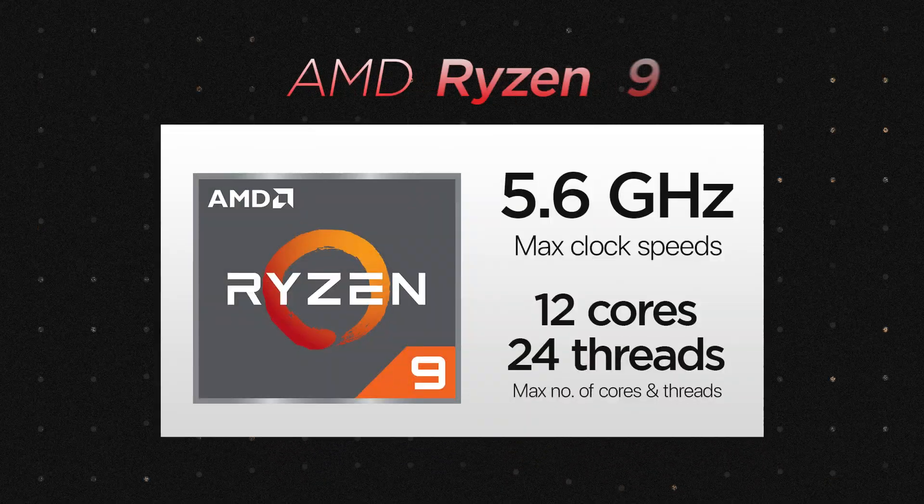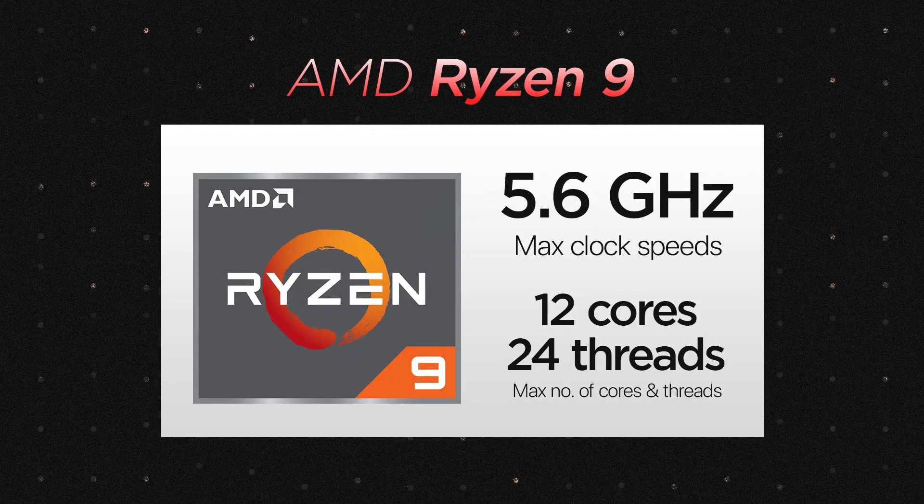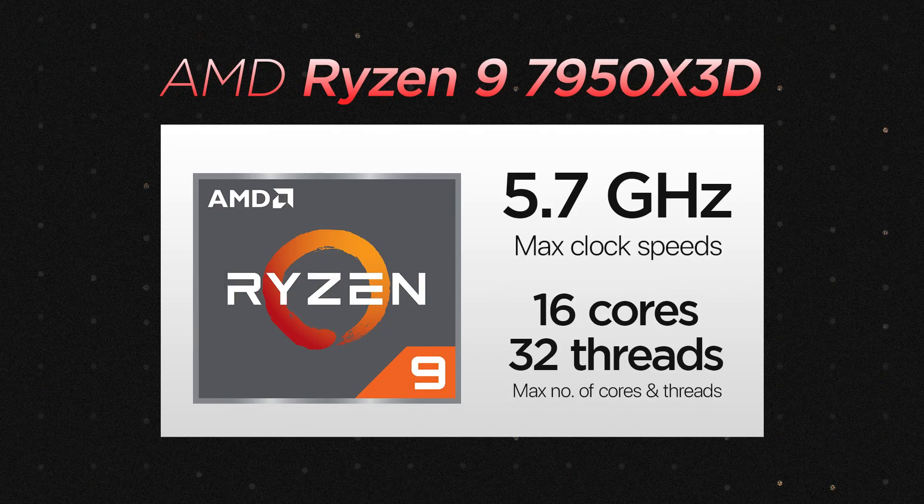The Ryzen 9 series is designed for high-end desktop and workstation users who need the best-performing Ryzen chip. There are a handful of them — the Ryzen 9 7900, 7900X, and 7900X 3D having 12 cores and 24 threads, while the highest-end Ryzen 9 7950X and 7950X 3D have 16 cores and 32 threads. They're a good choice for users who need to run the most demanding applications such as 3D rendering, scientific simulations, or those who want one of the fastest chips for gaming.